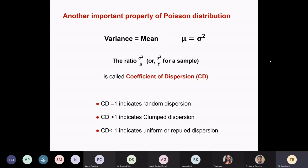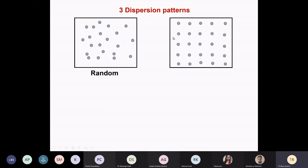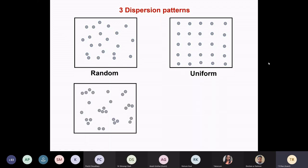So these are the three common patterns: random, clumped, and uniform. Uniform is like military personnel standing before drill starts — all evenly spaced. You can ask whether we see that kind of uniform dispersion in the biological world. You can check. In the clumped pattern, you see three or four together in groups — so they must be aggregated or clumped. These are the three common distribution types.